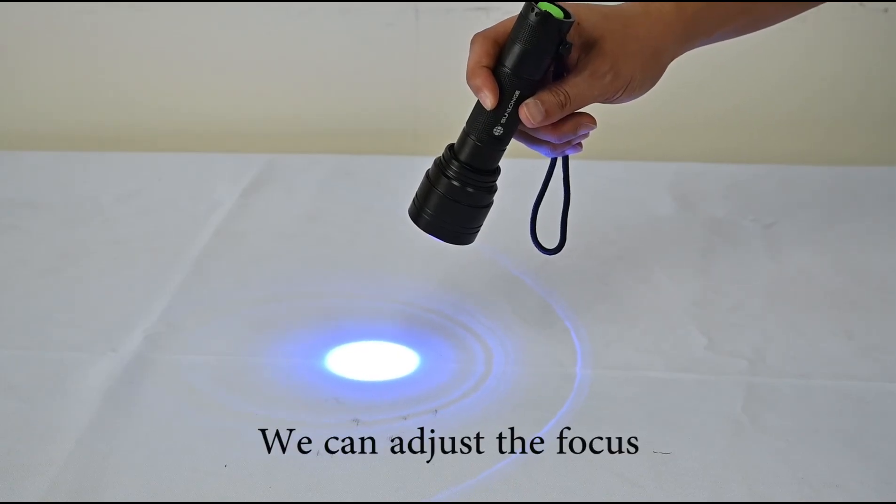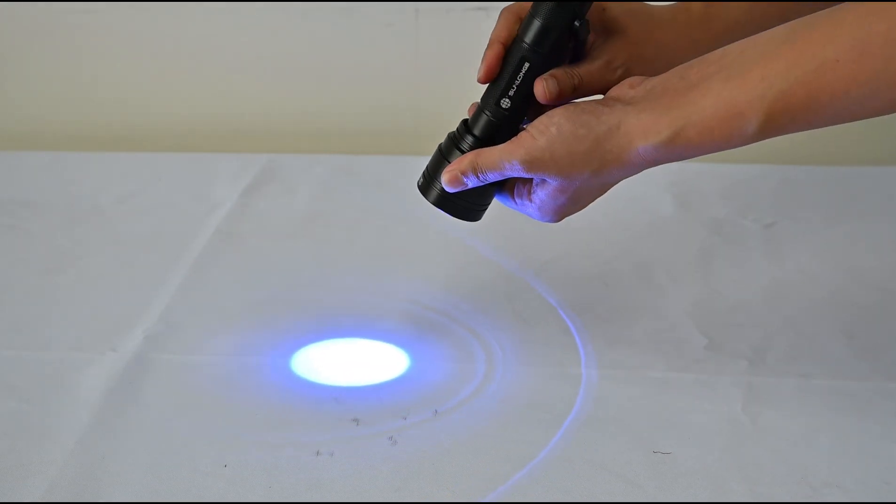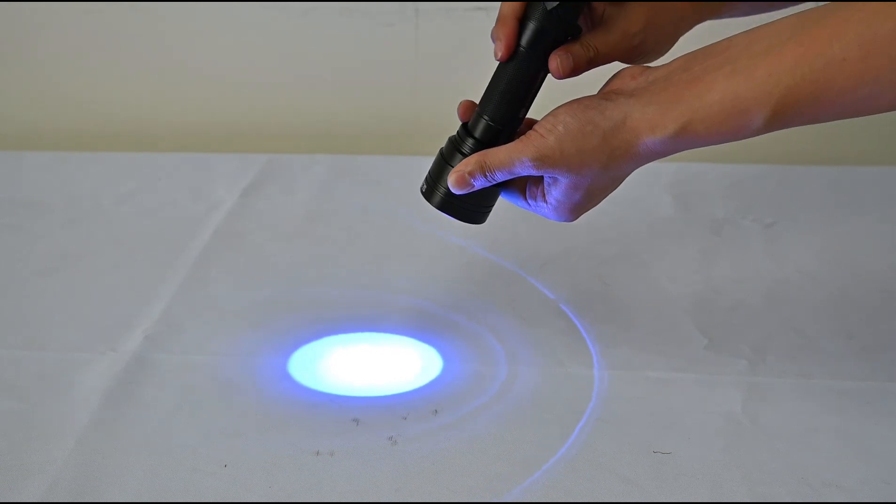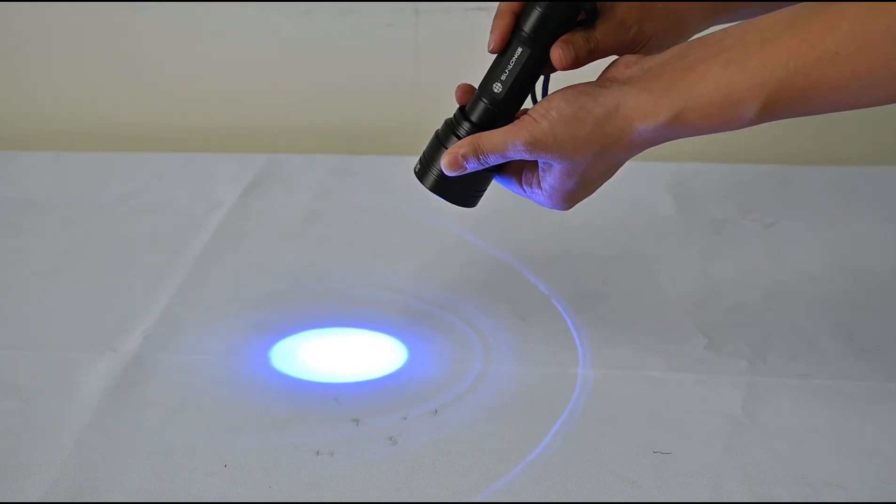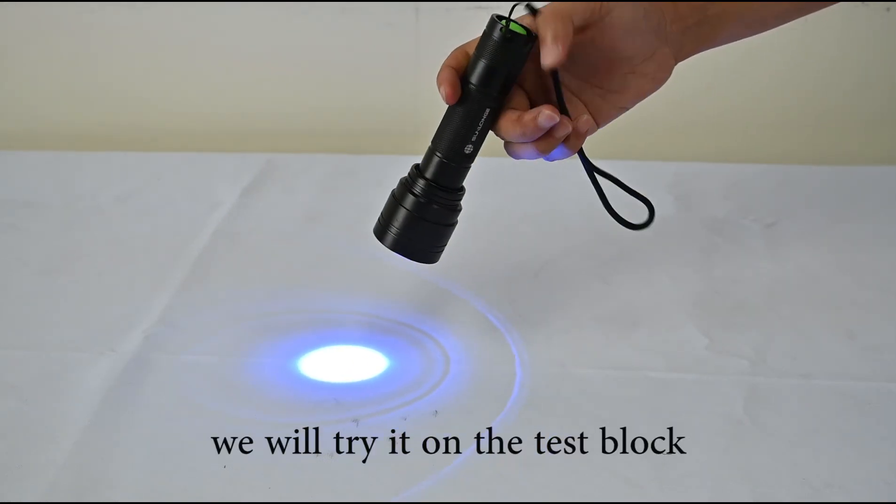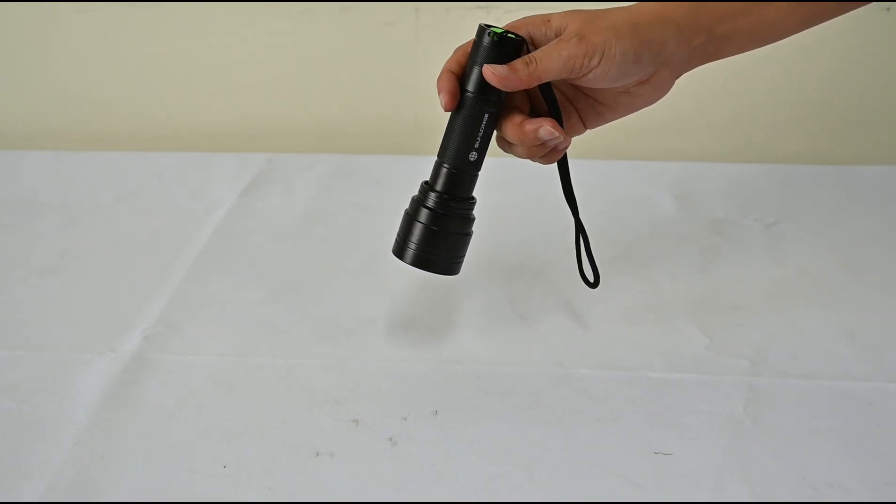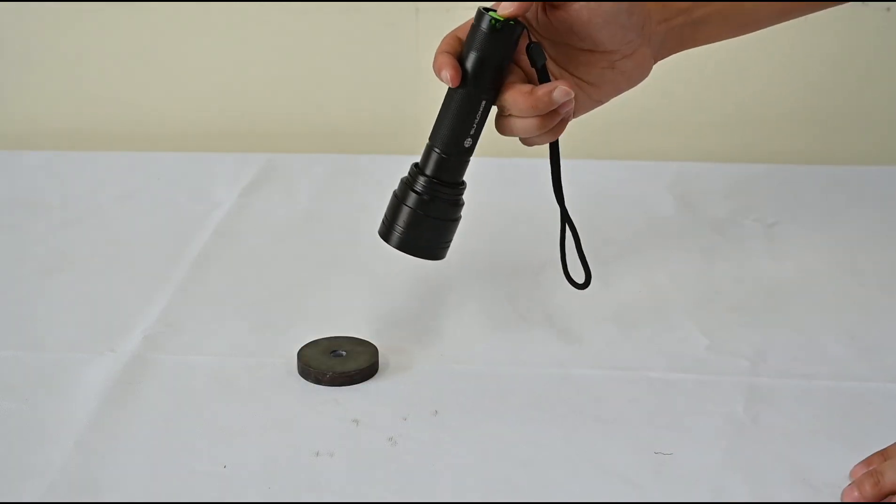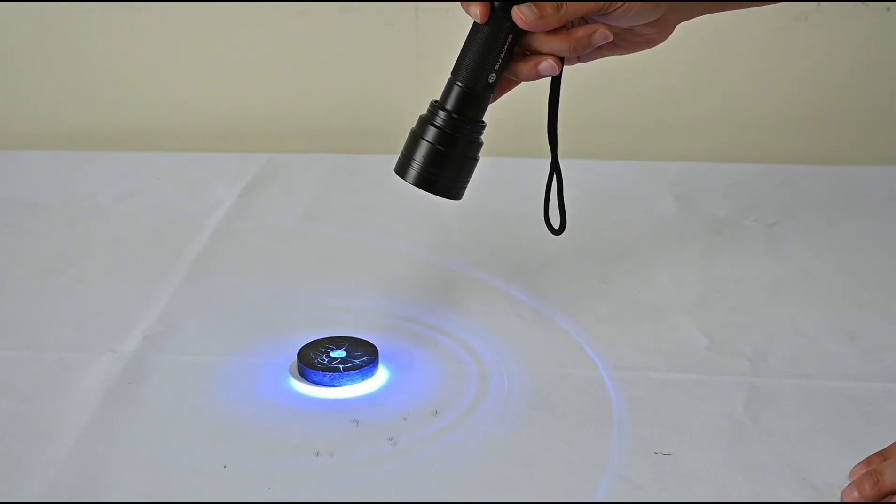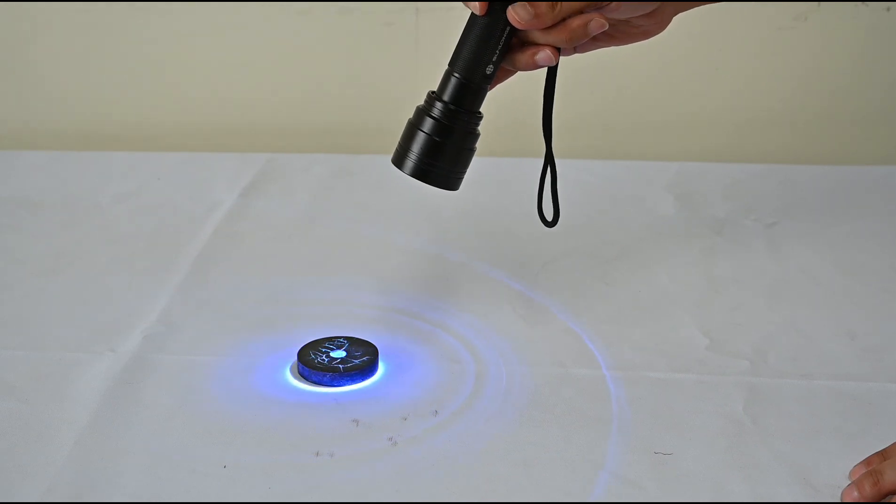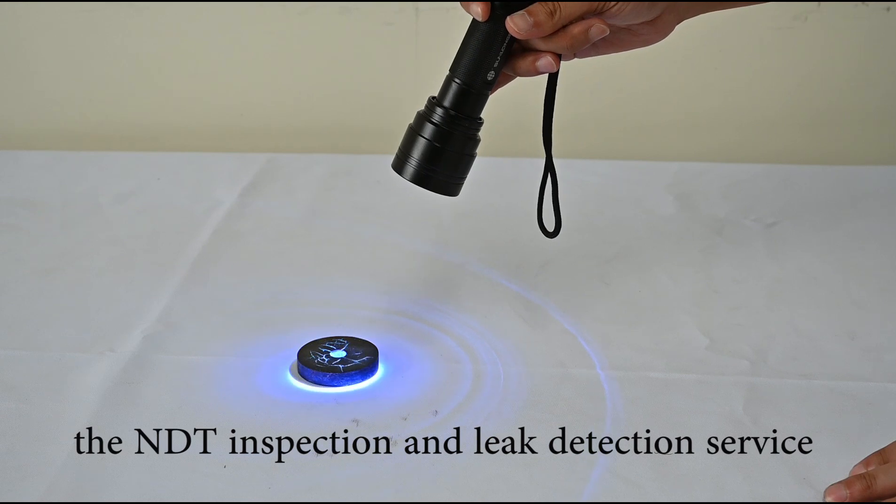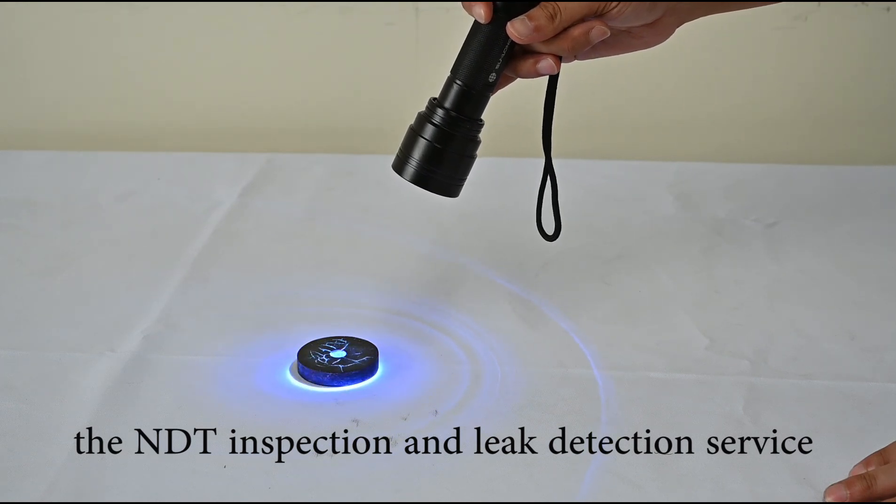We can adjust the focus. Zoom out. Zoom in. Now, we will try it on the test block. SL3600 is quite suitable for the NDT inspection and leak detection service.